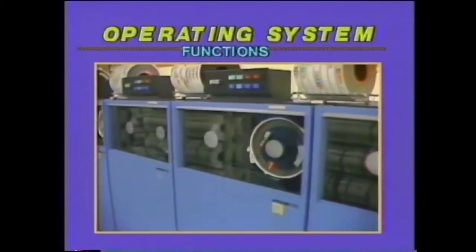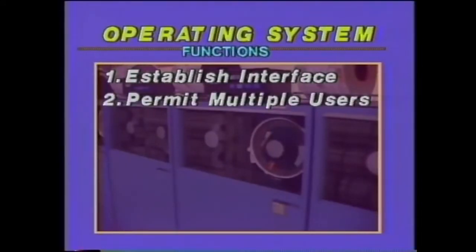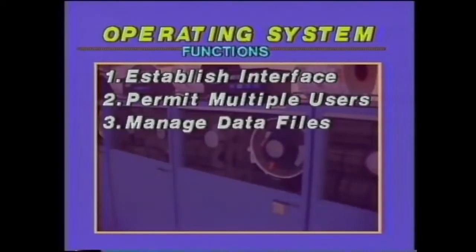On the large machine side, operating systems become very sophisticated and literally manage the computer resources to achieve their potential. One function of all operating systems is to establish the way users interface with the computer — for example, how data are stored in files and how programs are initiated. A second function is to permit multiple users to share the same hardware. A third is to manage data files so that data may be shared among several users or applications.